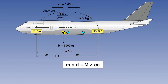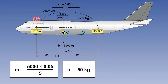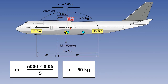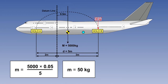The first step is to write down the formula, m times D equals M times CC, and transpose the formula to solve for m. Use the numbers in the formula for big M, CC, and D. Solving for little m, which equates to a mass of 50 kilograms — being the mass to be moved from hold A to hold B, to bring the centre of gravity onto the forward limit of 0.5 metres aft of datum.